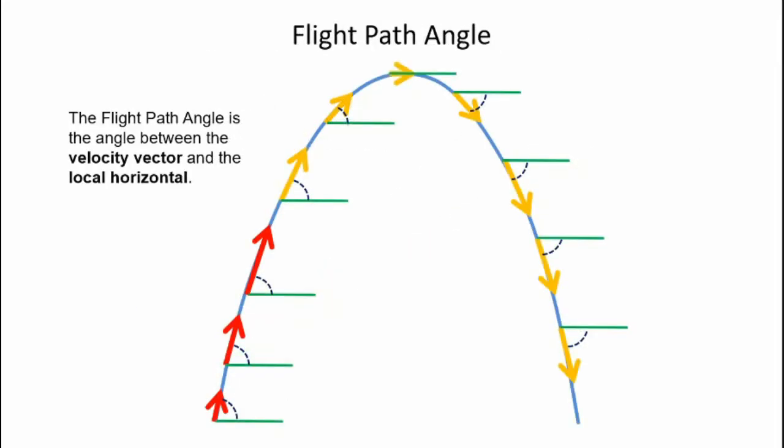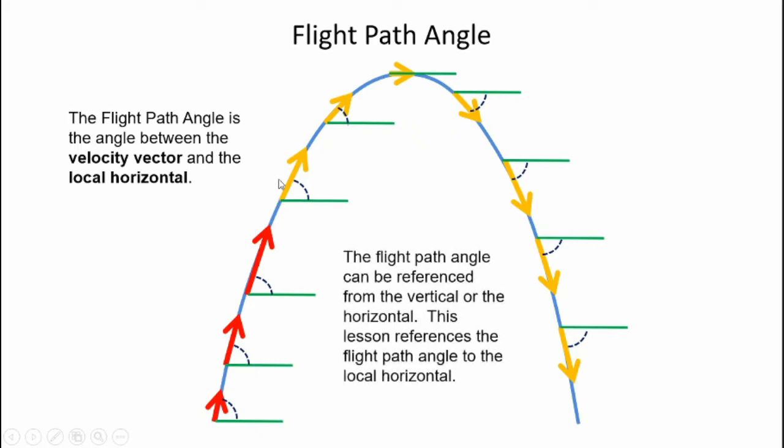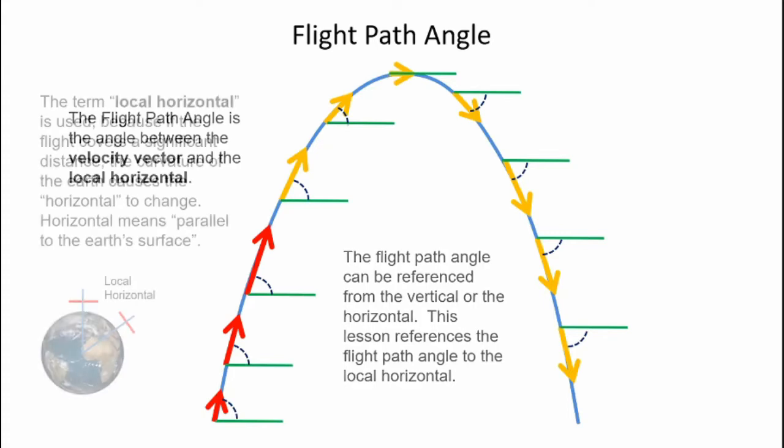Let's take a closer look at the flight path angle. As a reminder, the flight path angle is the angle between the velocity vector and the local horizontal. The flight path angle can be referenced to the vertical or the horizontal. In this lesson, I reference the flight path angle to the local horizontal. The term local horizontal is used because if the flight covers a significant distance, the curvature of the earth causes the horizontal to change. Horizontal means parallel to the earth's surface. Here the local horizontal is horizontal in this picture, but if I travel far enough around the earth, you'll see that the local horizontal changes.